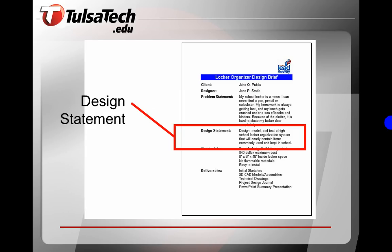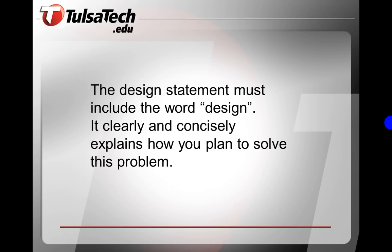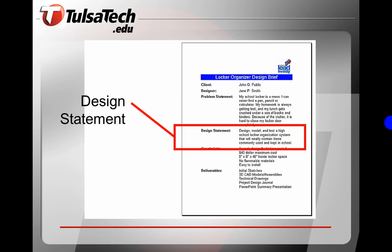Next is the design statement — what are you going to do about the problem? The design statement must include the word 'design.' It clearly and concisely explains how you plan to solve this problem. In the design statement it says: design, model, and test a high school locker organization system that will neatly contain items commonly used and kept in school lockers.